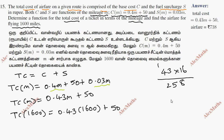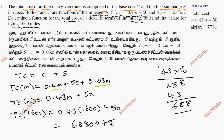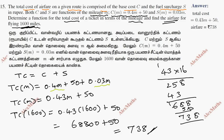43 multiplied by 16 gives 688, so 0.43 × 1600 = 688. Adding 50, the total is 738. So the airfare for flying 1600 miles is Rs. 738.